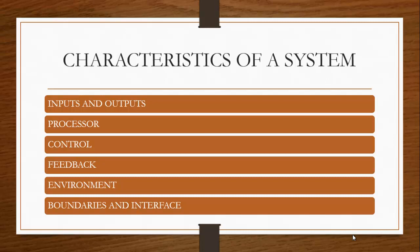Another characteristic is the processor. A processor is the element of the system that involves the actual transformation of input into output. It is also referred to as the operational component of the system. The processor modifies the input either partially or totally so that the output meets specification towards achieving organizational goals.